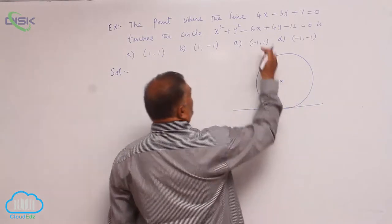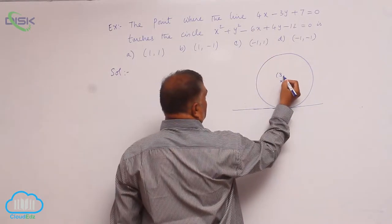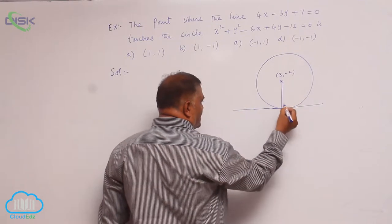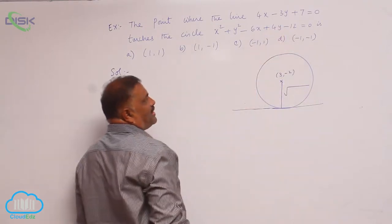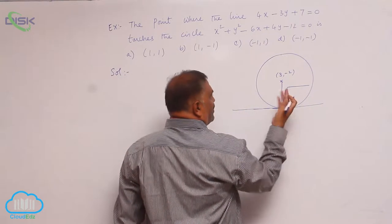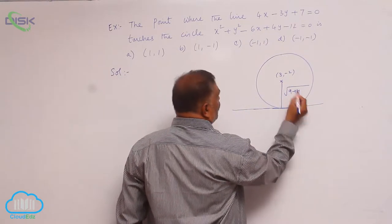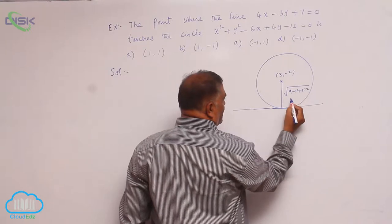Now what is center here now? This is 3 comma minus 2. Radius is given by square root of, you observe very clearly, g square 9 plus 4 plus 12. That is nothing but 5 units.